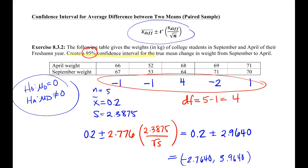So if I wanted to write a statement about this, I would say that I am 95% confident that in your freshman year from September to April, your change in weight will be somewhere between negative 2.7 pounds to positive 3.96 pounds. So you're either going to lose 3 pounds or you're going to gain 4 pounds, which means we don't have a whole lot of information.